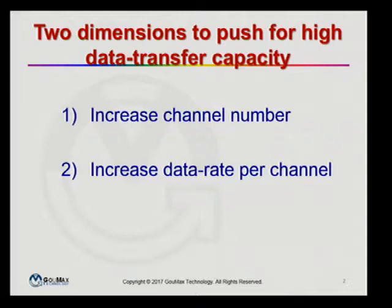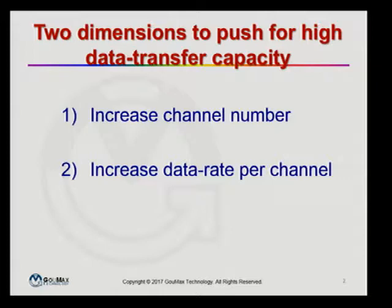In data communication, the ultimate goal is to push very high data transfer capacity to fulfill today's demand on bandwidth. We have fiber to the home, video on demand, all types of social networks — we need very high bandwidth. In order to achieve very high data transfer capacity there are two dimensions: you can either increase the channel number, or you can increase the data rate per channel. Interferometric devices play a very important role in both of these areas.